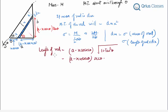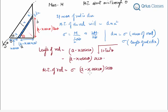Now we know the length of the rod. We can write the moment of inertia of the elemental rod as dI = σ·(a − x·cscθ)·secθ·x²·dX.